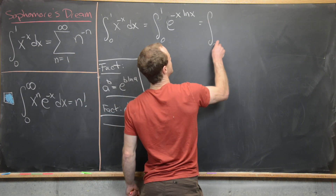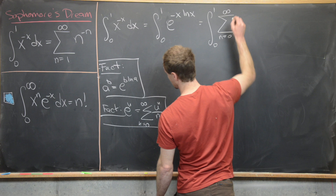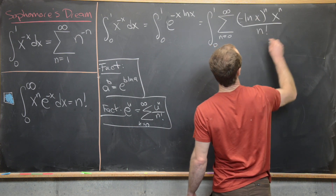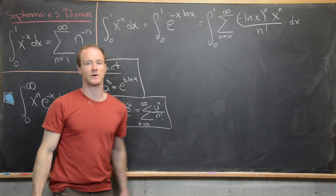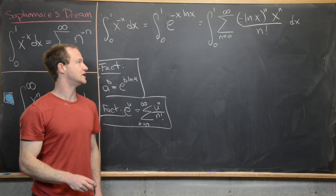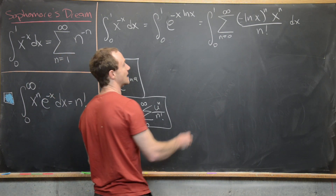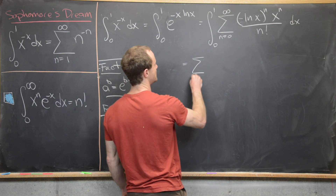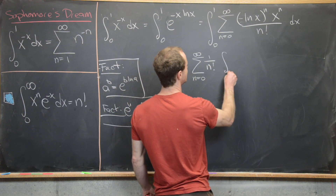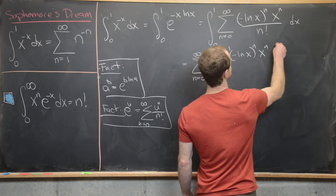We expand the exponential as a power series using the Taylor expansion e to the u equals the sum from n equals 0 to infinity of u to the n over n factorial. So we can rewrite the integral as the integral from 0 to 1 of the sum from n equals 0 to infinity of minus natural log of x to the n times x to the n, all over n factorial, dx. By the dominated convergence theorem, we can swap the order of summation and integration, giving us the sum from n equals 0 to infinity of 1 over n factorial times the integral from 0 to 1 of minus natural log of x to the n times x to the n dx.